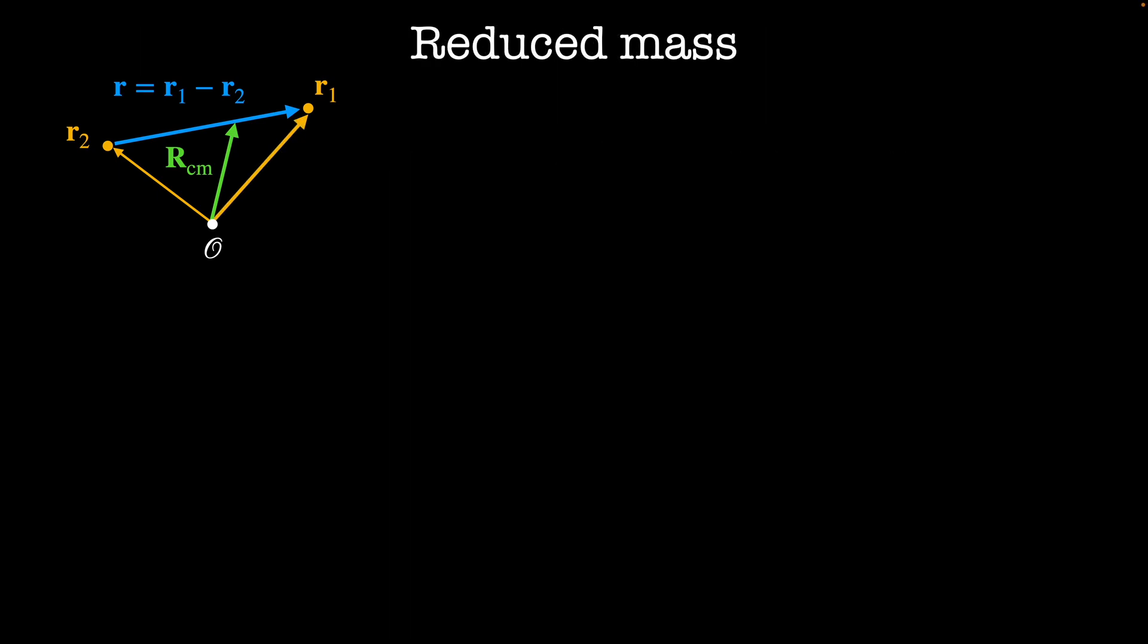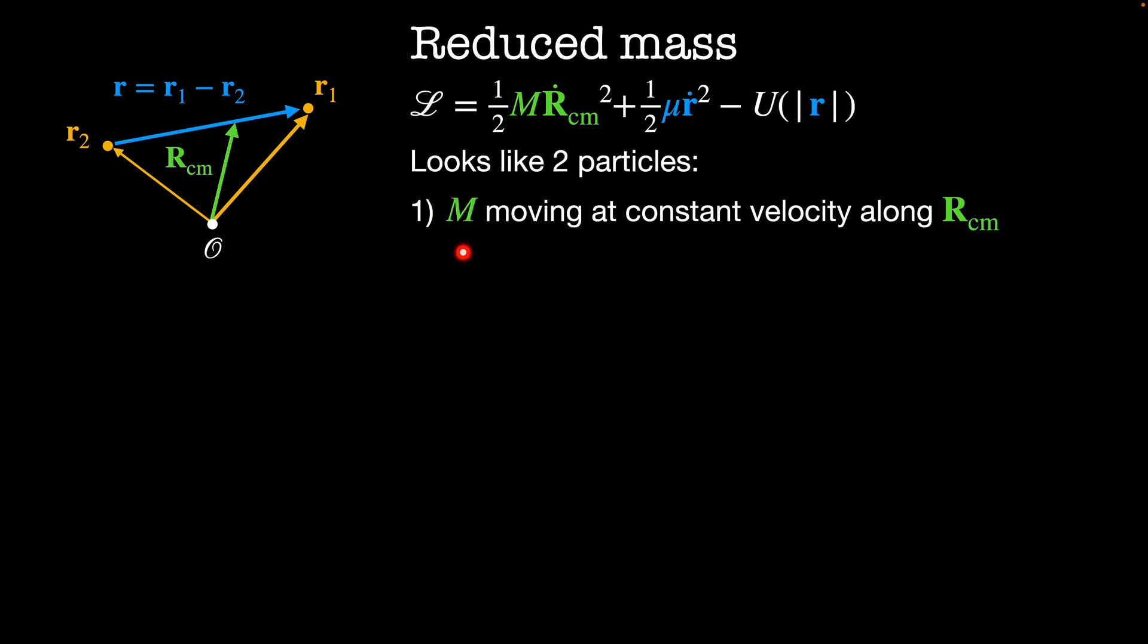In these new coordinates, the Lagrangian is much simpler. It's given by 1/2 the total mass times Rcm squared plus 1/2 the reduced mass times r dot squared minus the potential energy, which depends only on the magnitude of r. This looks like the Lagrangian for two isolated particles. The first particle has mass big M and it's moving at some constant velocity in the Rcm direction. The second particle has mass μ and it's moving in some potential U according to the coordinate r.